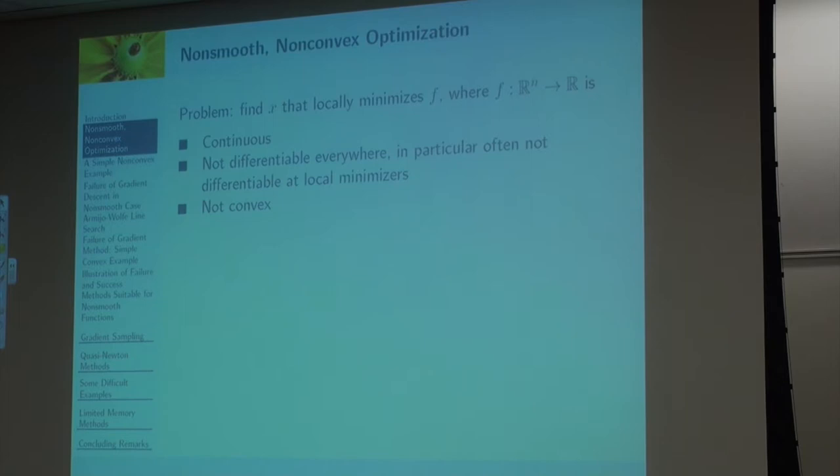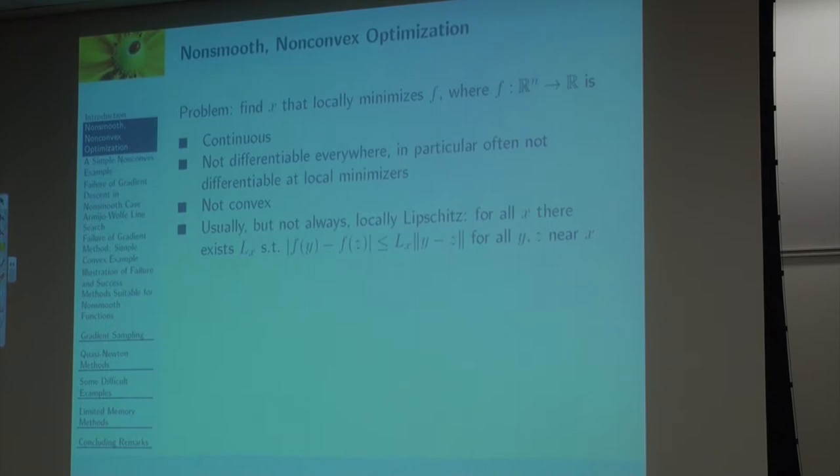In particular, it's typically not going to be differentiable at local minimizers, and it's non-convex. If we knew it was convex, then we would be able to do all sorts of things. We probably in most cases would assume it's locally Lipschitz because otherwise it's really difficult.